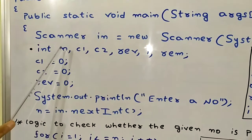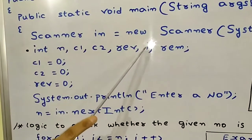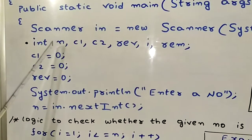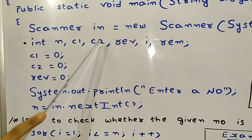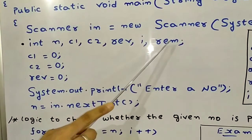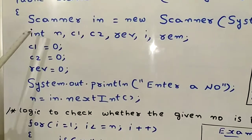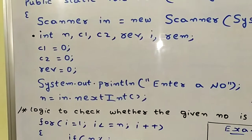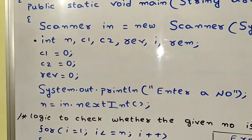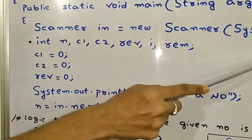The variables declared are: n, c1, c2, rev, i, and rem — all of the int data type. Each variable has a specific purpose.